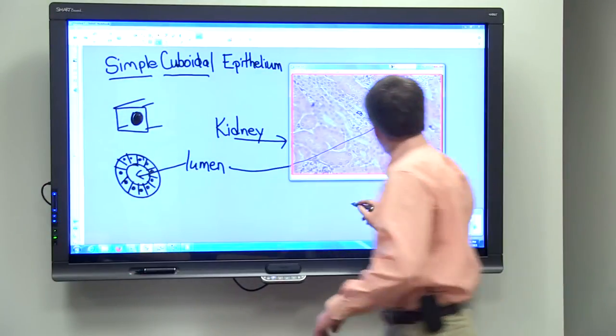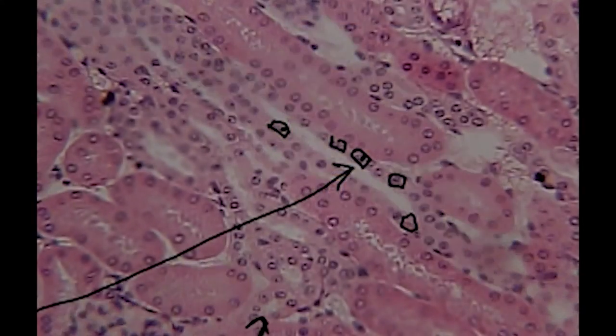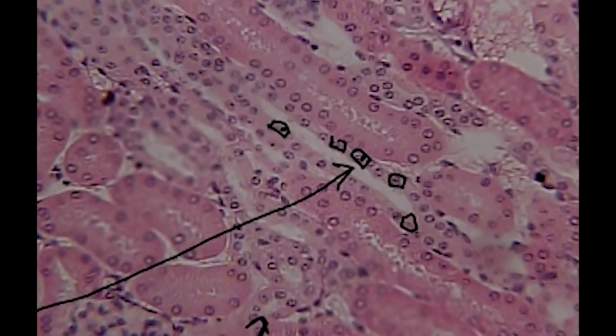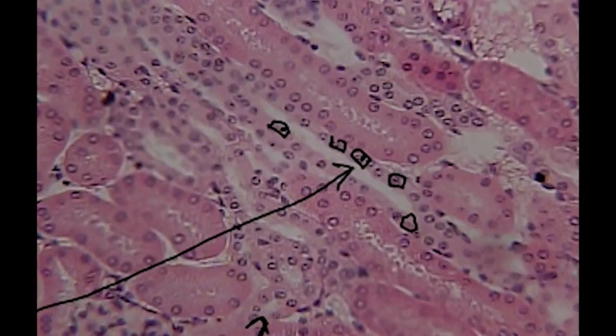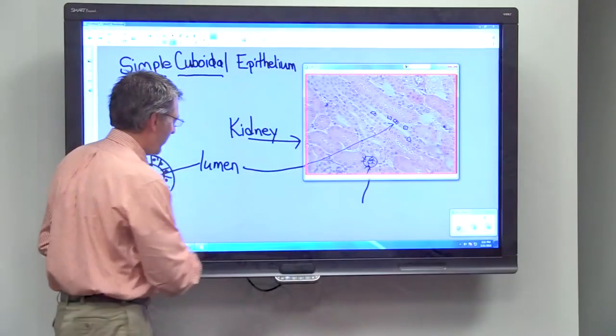Now if we look in this area, let me adjust that focus just a little bit. You can see where we have more of a cross section of a tube. So this is the tube, there's the lumen, and you can see that would look something like that.